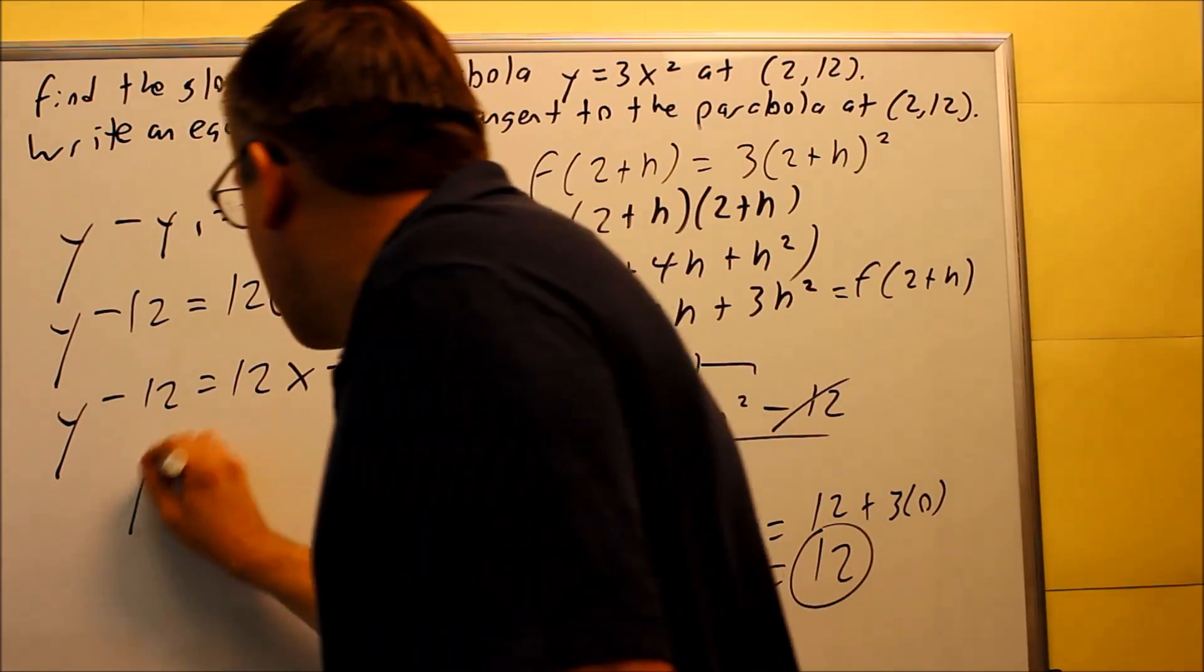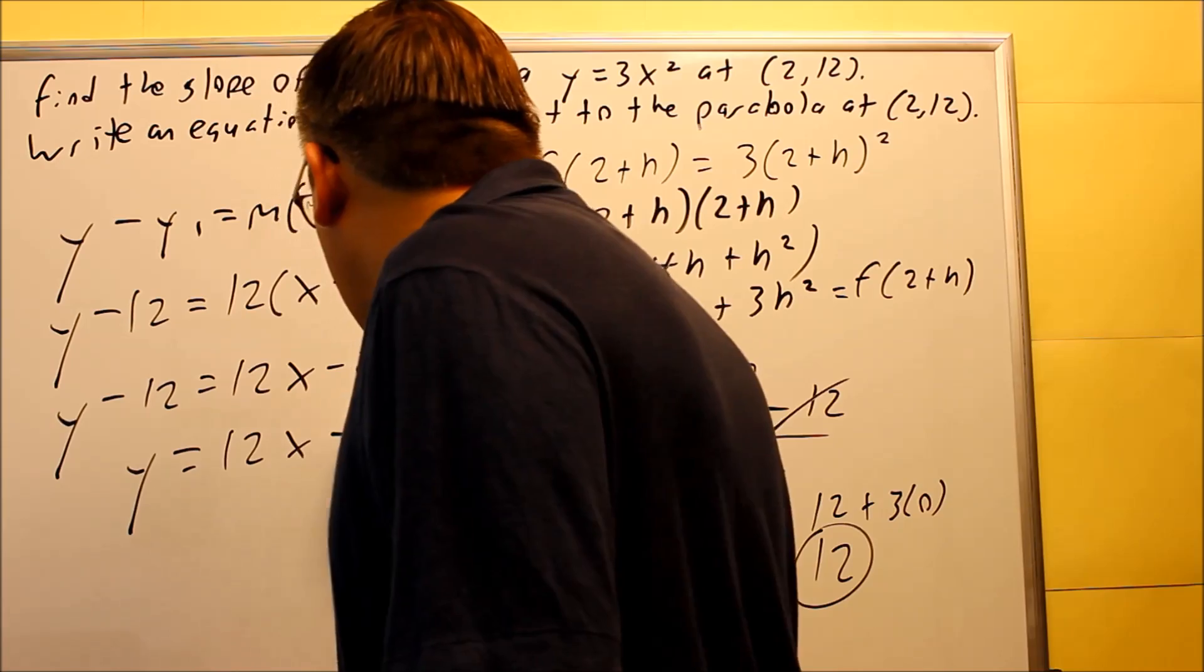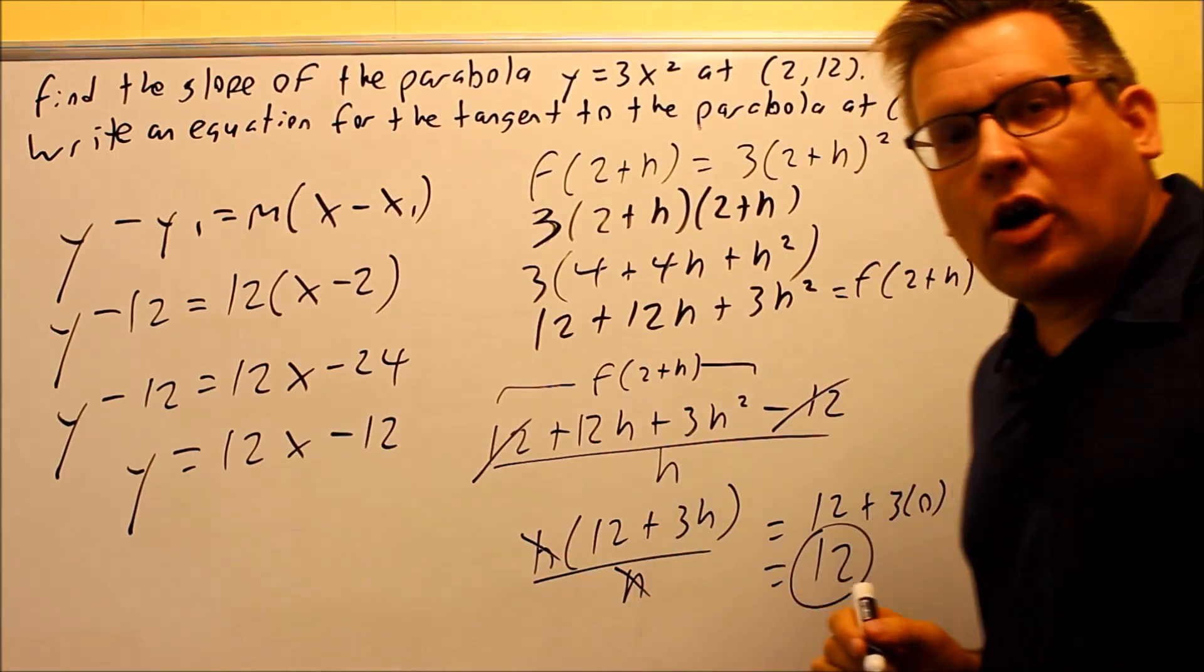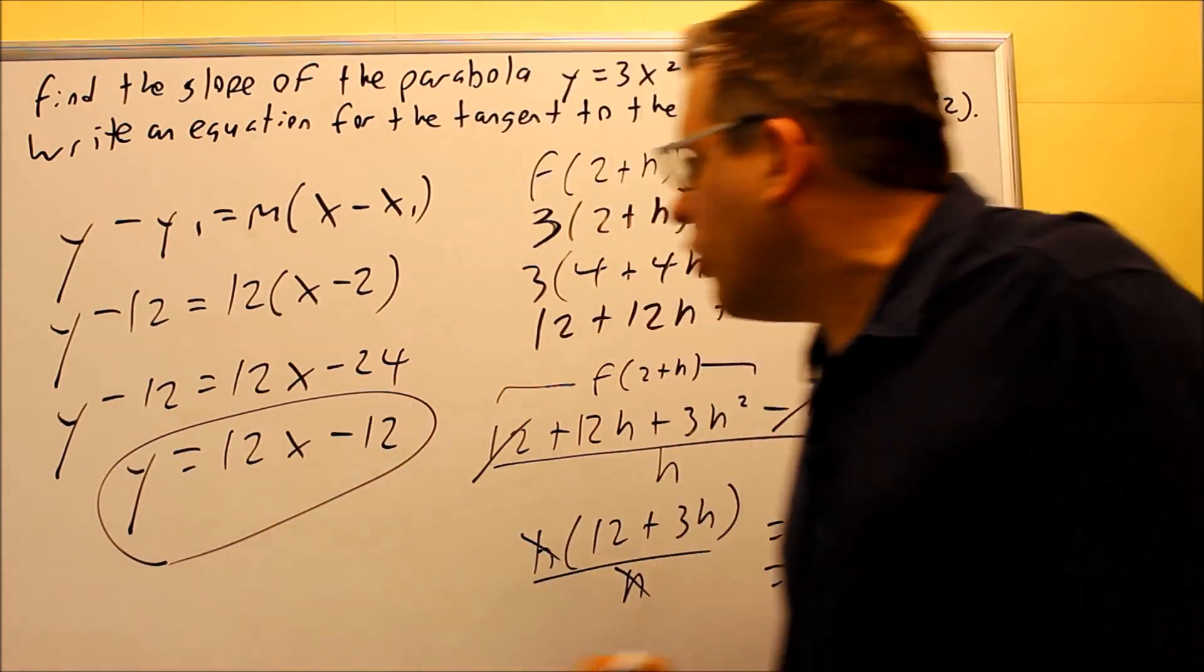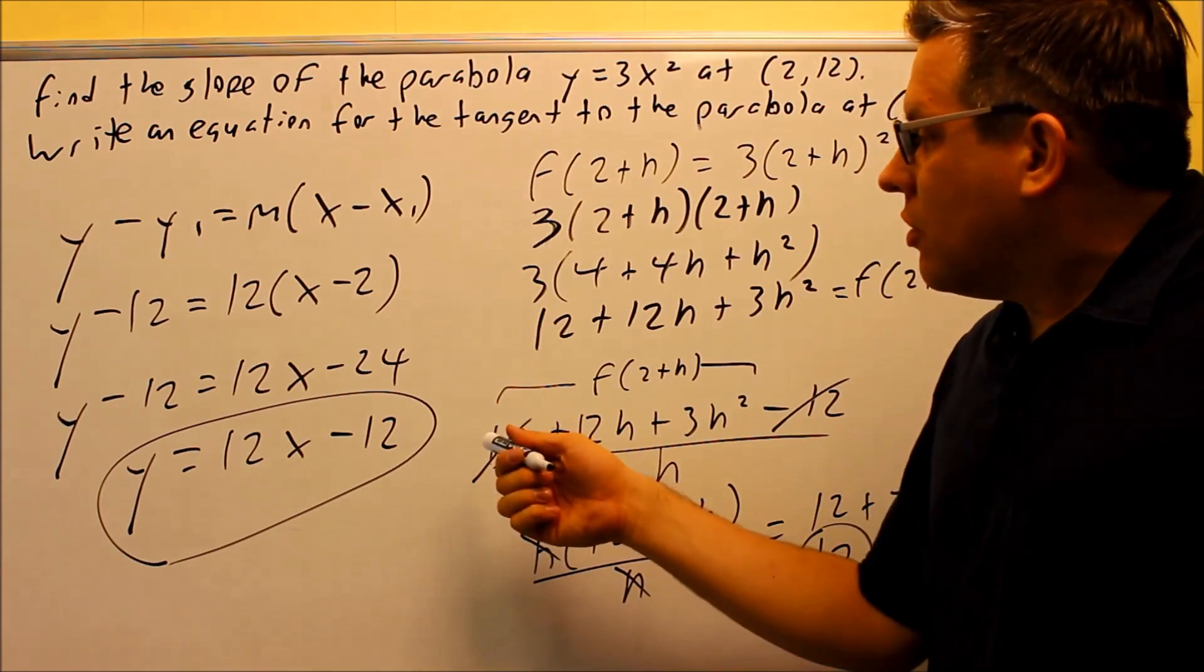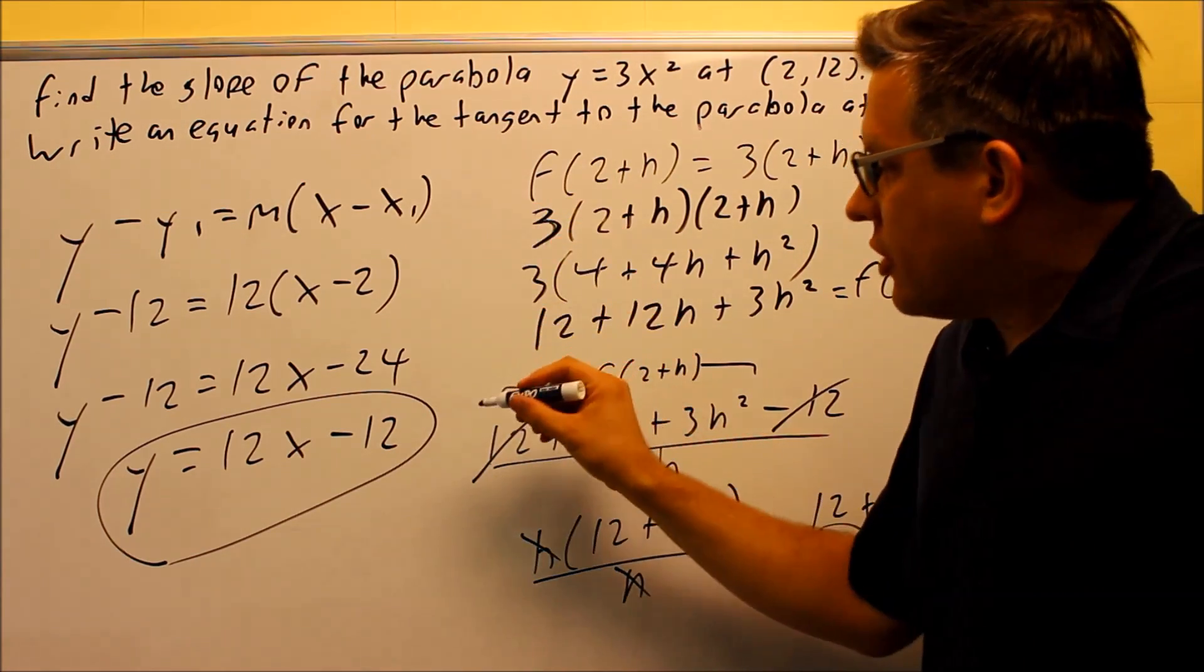So I'm going to multiply this out. I get 12x minus 24. I'm going to add 12 to both sides. Be careful with the minus sign there. And you're going to get 12x minus 12 as your answer. Okay, so this would be the equation for the tangent line.